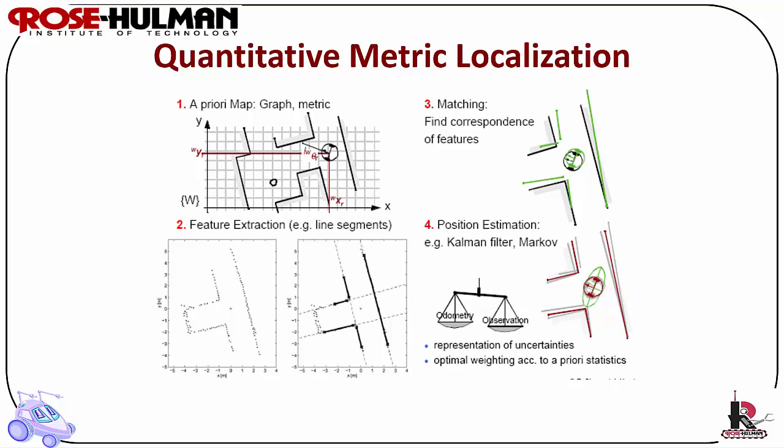The robot then performs matching to correspond features extracted with a location in the world. The robot then uses position estimation theory to determine the probability that it is in the correct location.